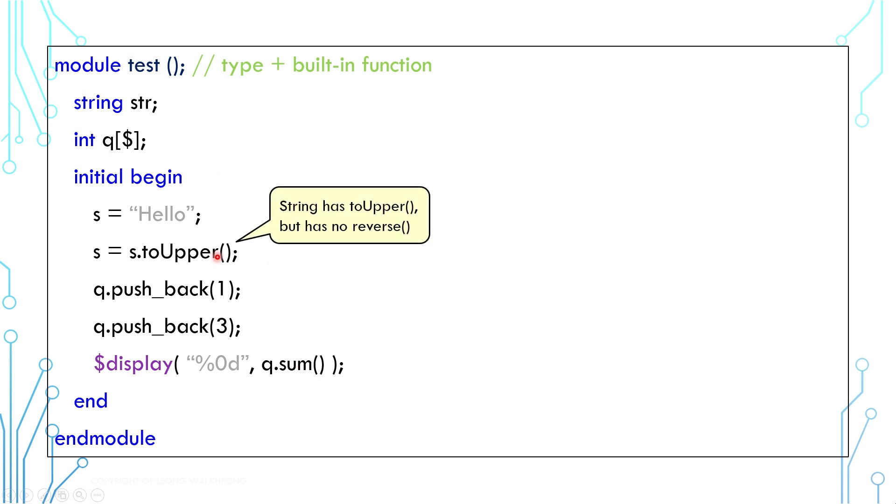Now, let's say we need a function to reverse the string. The native string type does not have that function. Similarly, if we want to get the average value of all array elements, the native queue also does not have that function.